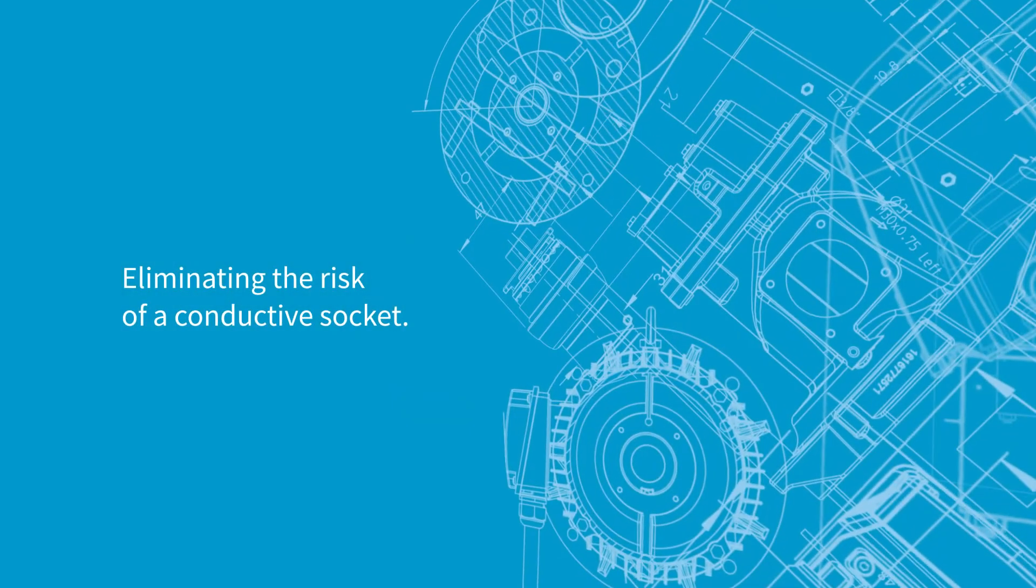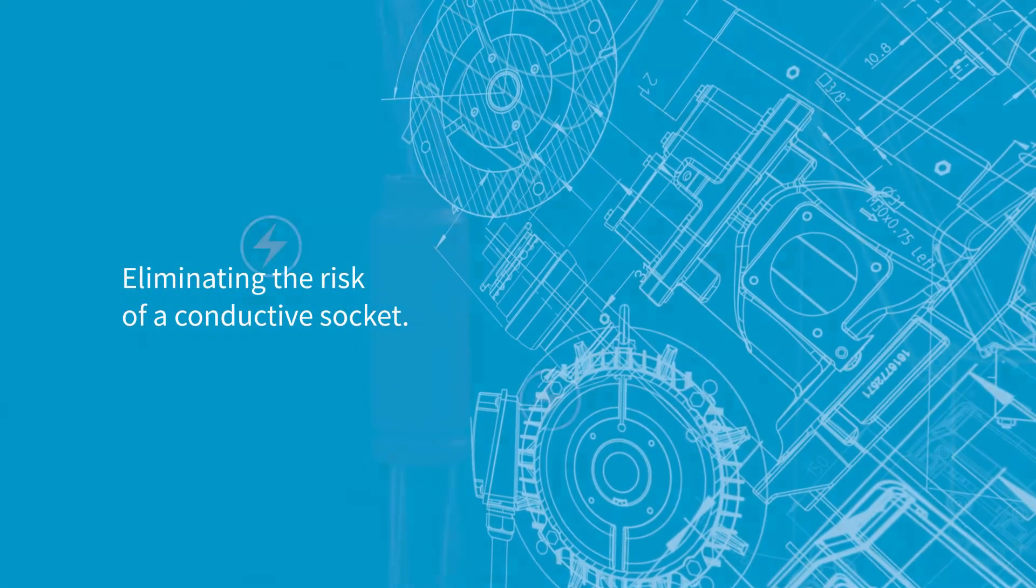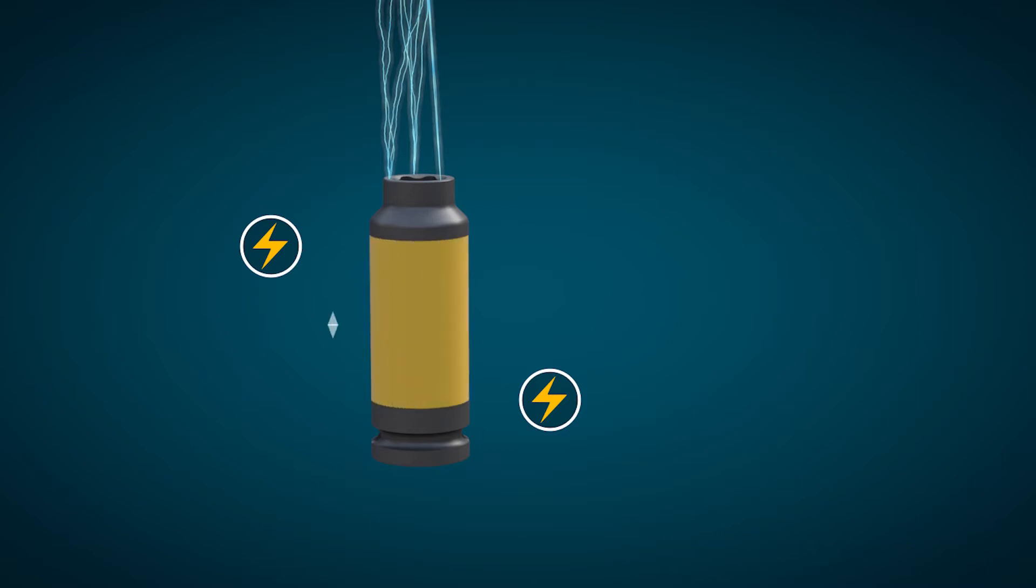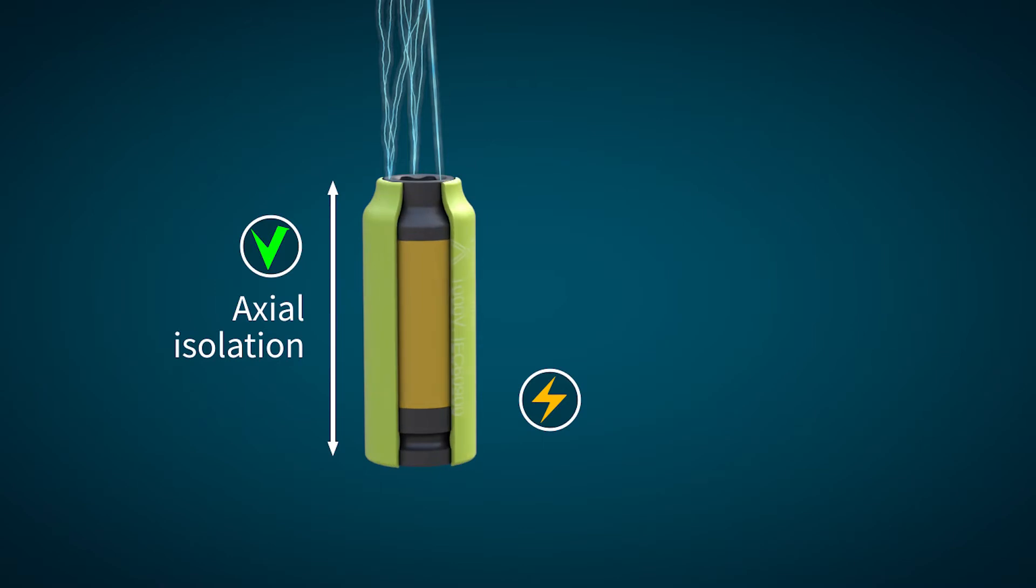The challenge is that a metal socket is an excellent conductor of electric currency. We break that conductivity by introducing a bridging component that has no conductive qualities. Combined with this axial isolation, we cover the socket with an insulating sleeve for radial insulation.